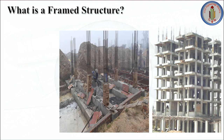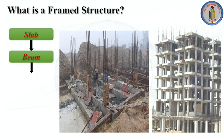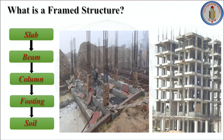Frame structure is also known as beam-column structure. It has structural components of beam, slab, and column, and these components act together to resist gravity as well as different types of lateral loads. It is also used to overcome large forces and moments developing due to applied loads. In frame structure, the load transfers from slab to beam, beam to column, column to footing, and footing to soil.